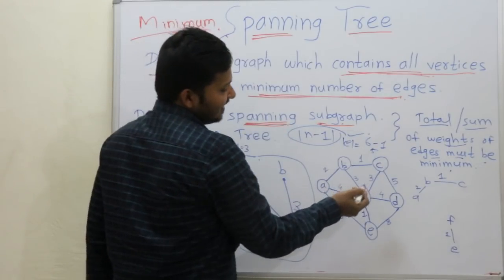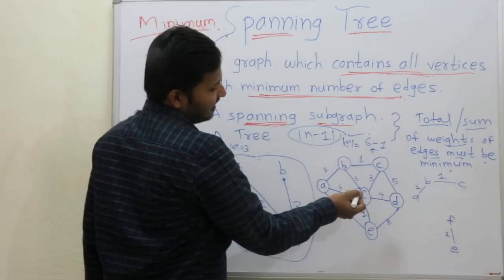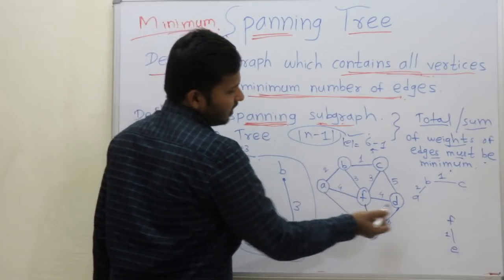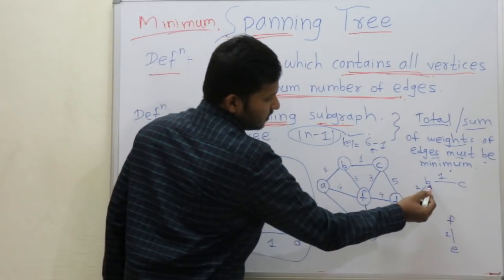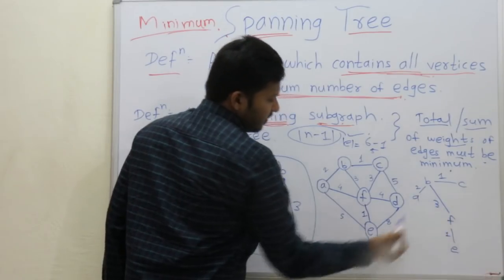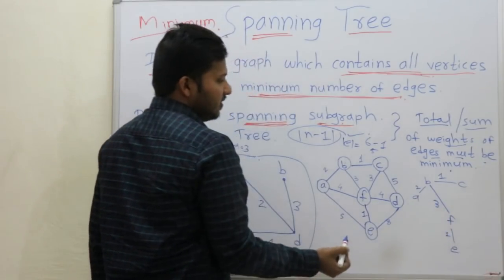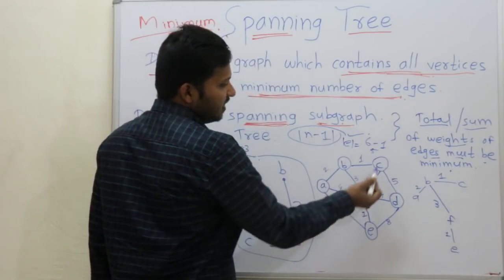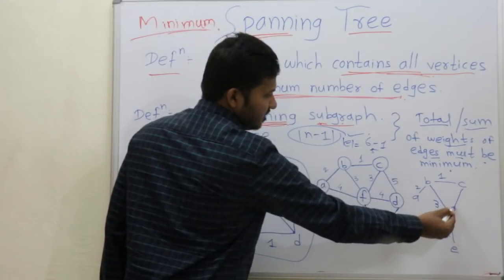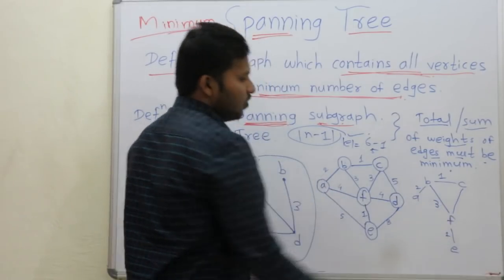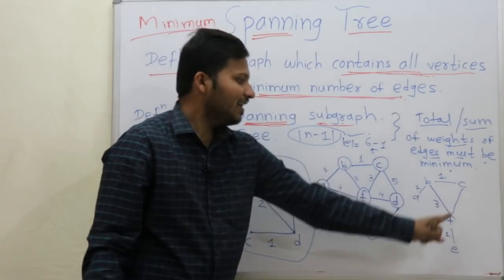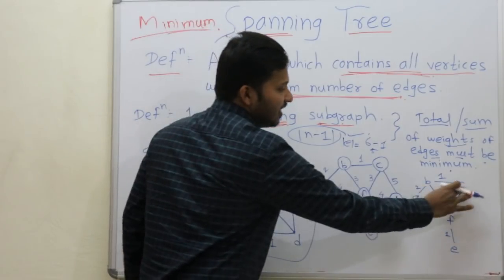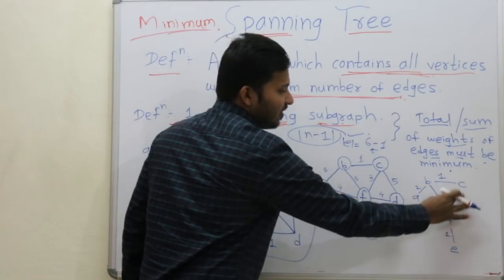So B, F has value 3. And also check C, F — make that edge. But that edge forms a cycle, so you should not take edge C, F.